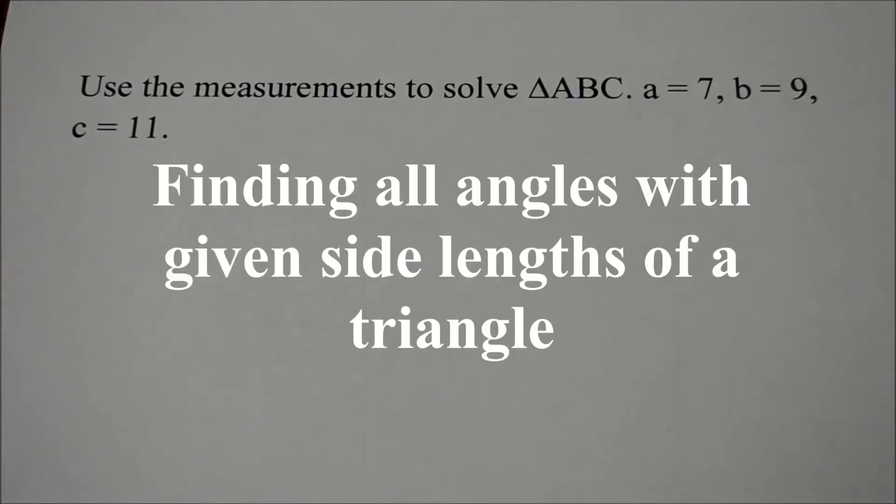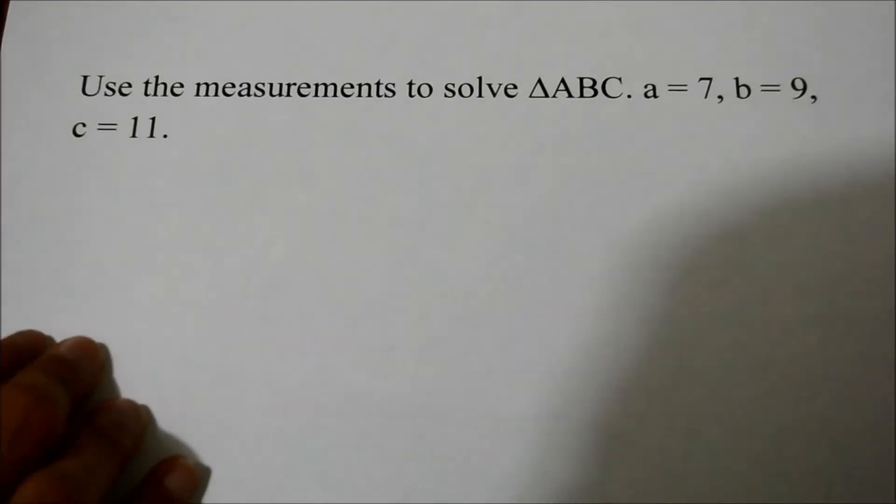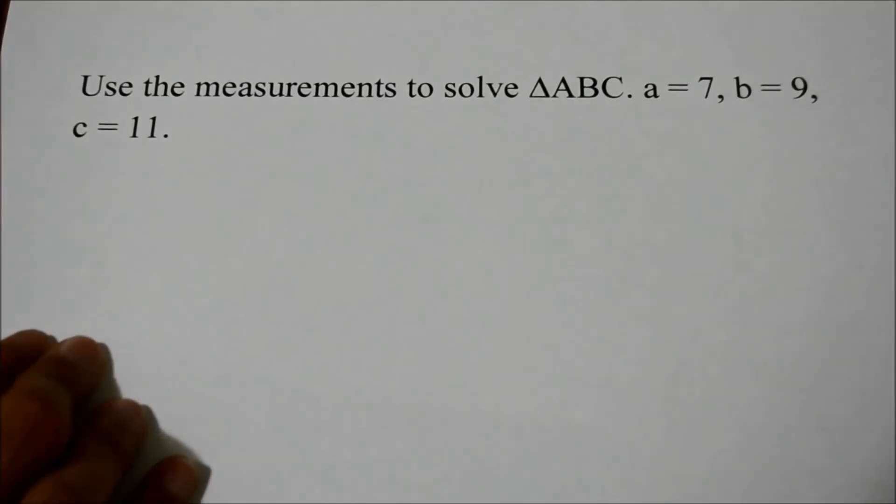In this video, I'm going to show you how to solve a triangle using the given measurements of only side lengths. The measurements are side length a which is equal to 7, b is equal to 9, and c is equal to 11.